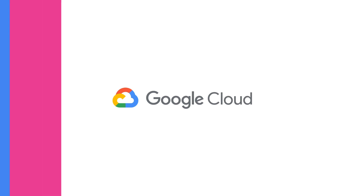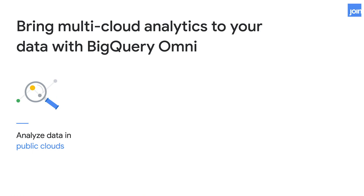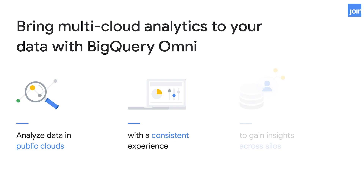BigQuery Omni is now in Alpha, and it's powered by Anthos, so you don't have to move or copy data to query it. BigQuery Omni lets you analyze data in public clouds — we bring the power of analytics directly to your data. No need to do any movement or copies, or deal with managing a bunch of different query engines or data platforms. You have a consistent experience whether you access via Looker or via the BigQuery UI — it's the same standard SQL, the same way of interacting with your data, regardless of what silo that data was in.